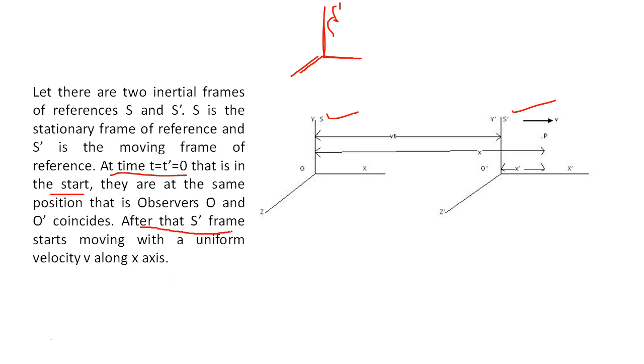After that, S dash frame starts moving with a uniform velocity V along x-axis. Here, you can see that this frame starts moving with a uniform velocity V along x-axis.